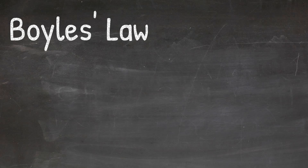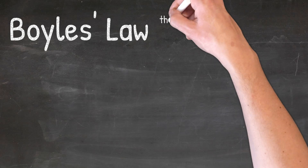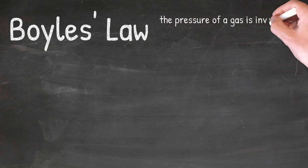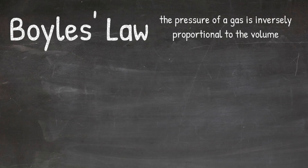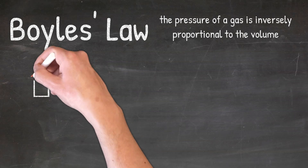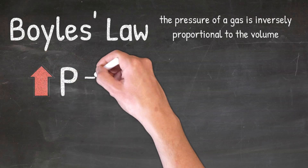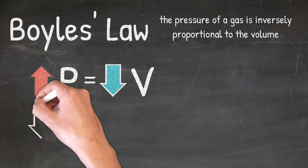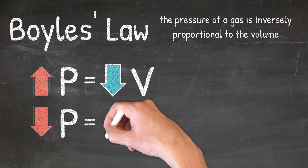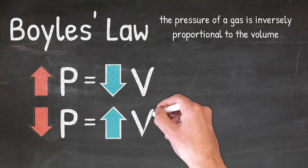Boyle's Law tells us that the pressure of a gas is inversely proportional to the volume. What this means is that when one goes up, the other goes down. In other words, if the pressure increases, then the volume will decrease, and if the pressure decreases, then the volume will increase.